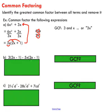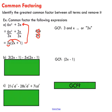This next example looks more difficult, and your first instinct might be to use the distributive property to clean it up — but we're actually going to common factor it instead. We're trying to remove the greatest common factor. Looking at the first term, 3 times (2x minus 1), and the second term, negative 5x times (2x minus 1), the greatest common factor that both terms share is actually the entire binomial: (2x minus 1).